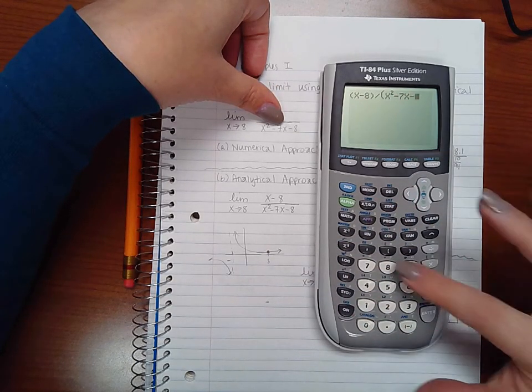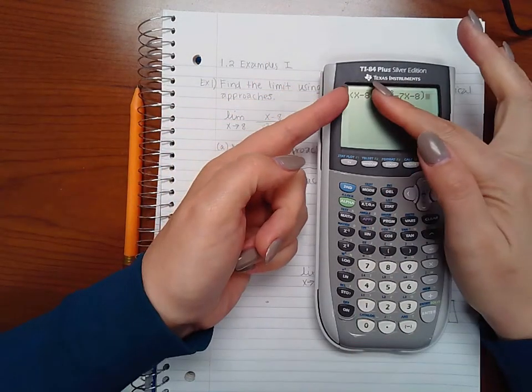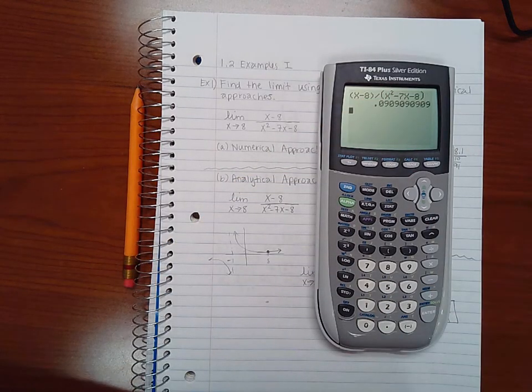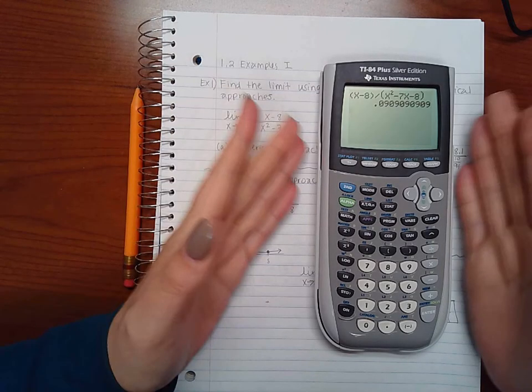This is my entire numerator and this is my entire denominator. Now I'm going to hit enter but I'm going to ignore that value because I'm not sure what was plugged in for x the last time I used this calculator.